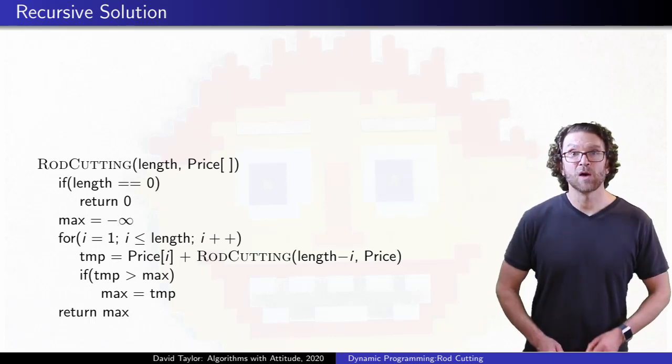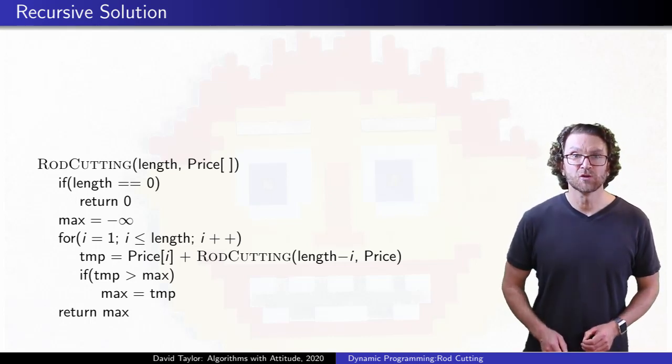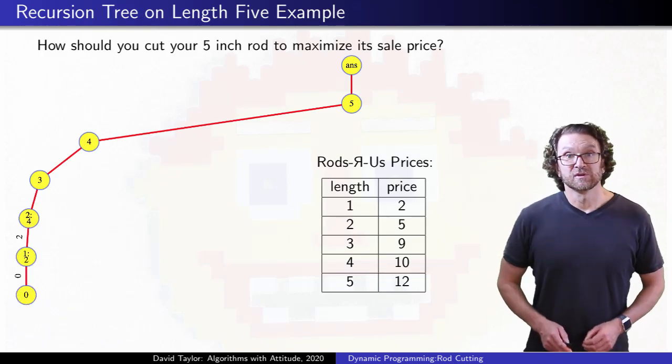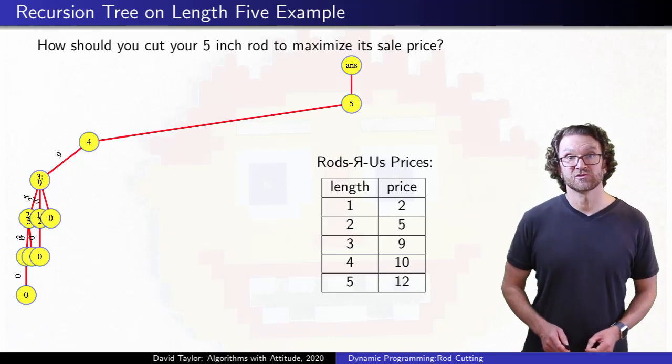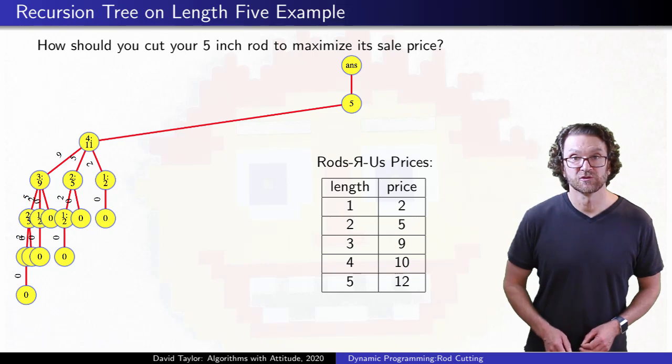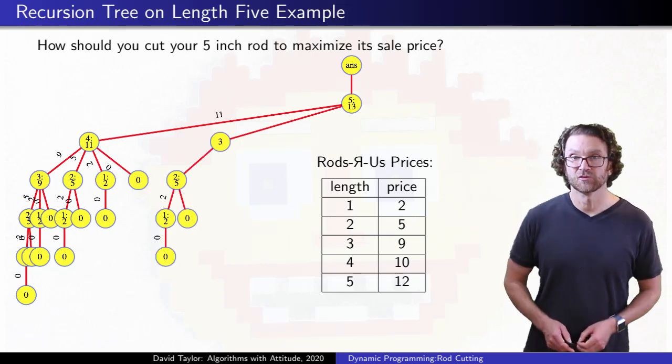So great, now we have a simple recursive program. Let's see what that looks like if we run it on a small sample problem of length 5. So each node tells you the length of the rod, and it stores the best answer it's seen from all the possibilities it's tried so far. When it finishes,